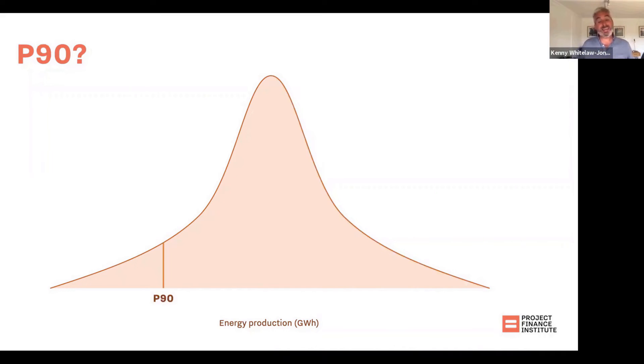P90 would be a lower level of energy production, because it's a level that has a 90% chance of being exceeded.